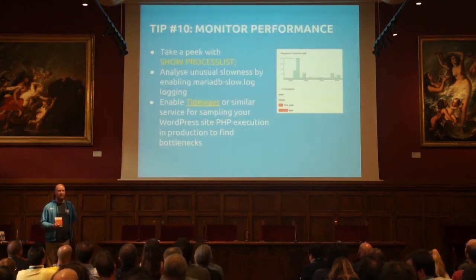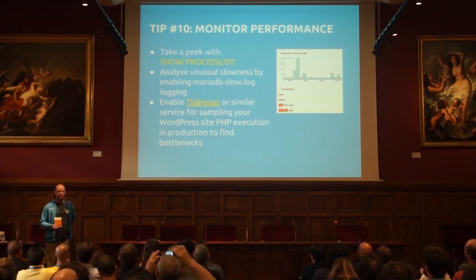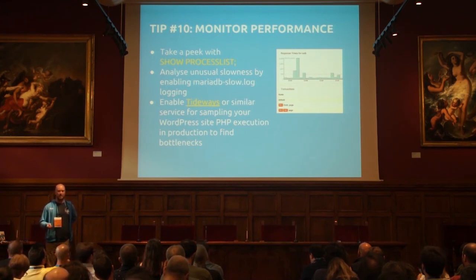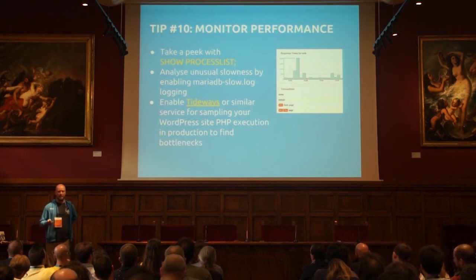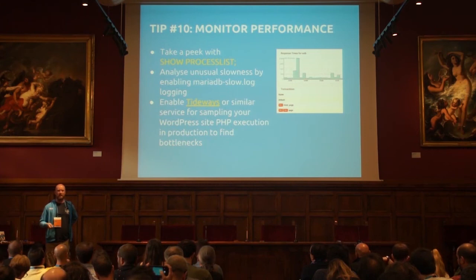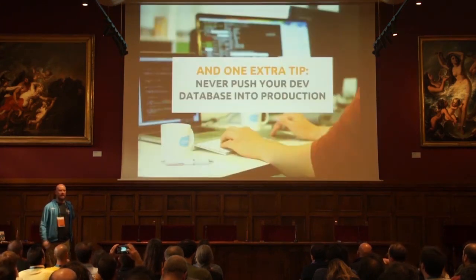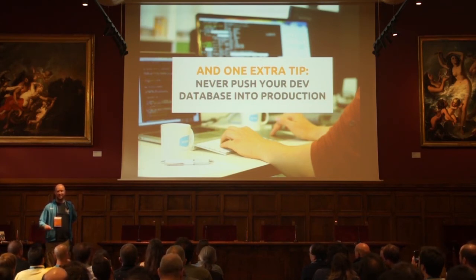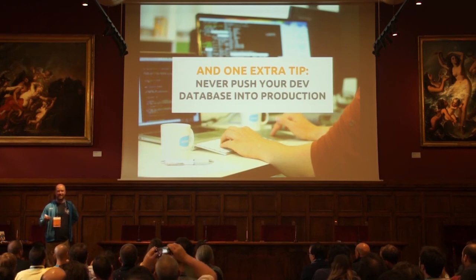My last tip: do something to monitor your performance. You can use SHOW PROCESSLIST in the console, or enable MariaDB's slow query log — for example, log all queries that take more than five seconds and analyze the log. There are also tools like Tideways to analyze what's happening in your PHP code and database in real time in production. One final extra tip: never push your database into production. This unfortunately happens often — people develop WordPress sites doing some things in code and some in settings, and the settings are in the database, so they're tempted to push the database to production. That's bad. Try to do something else.